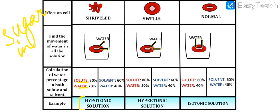Regarding hypotonic, hypertonic, and isotonic solutions: in the simplest way, hypo means water is more; hyper means water is less; and iso means water and solute are the same.